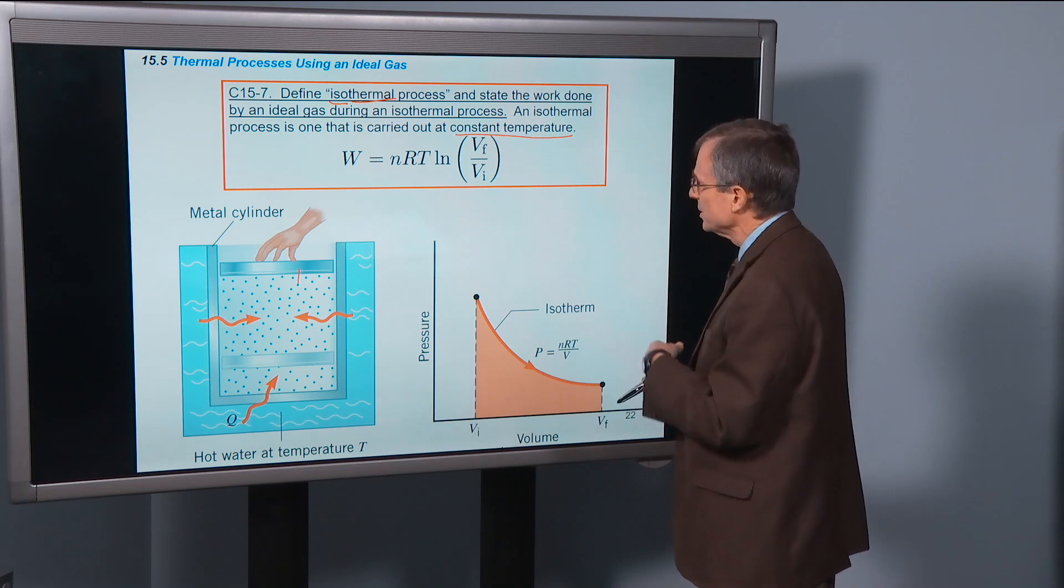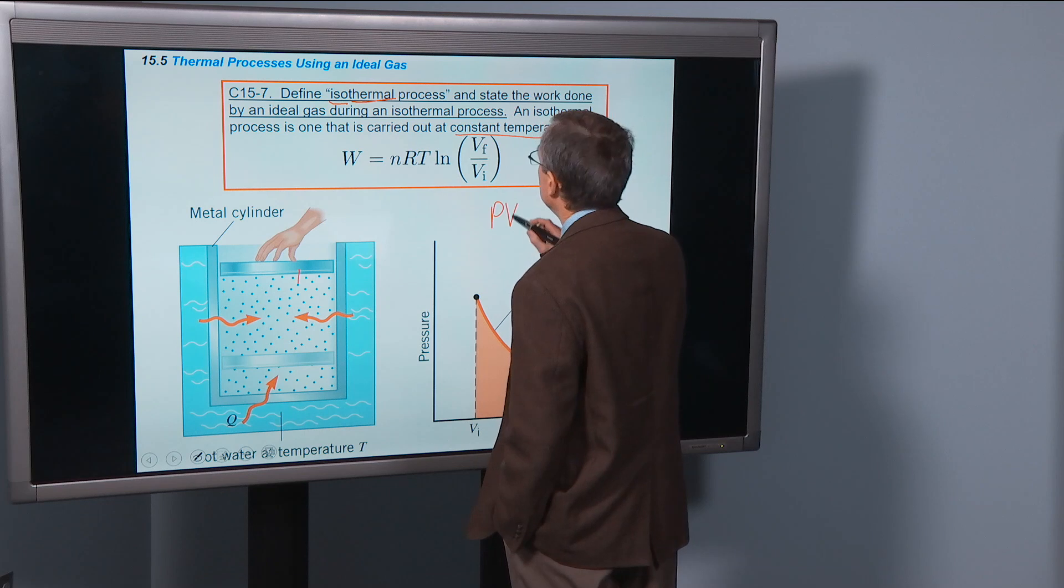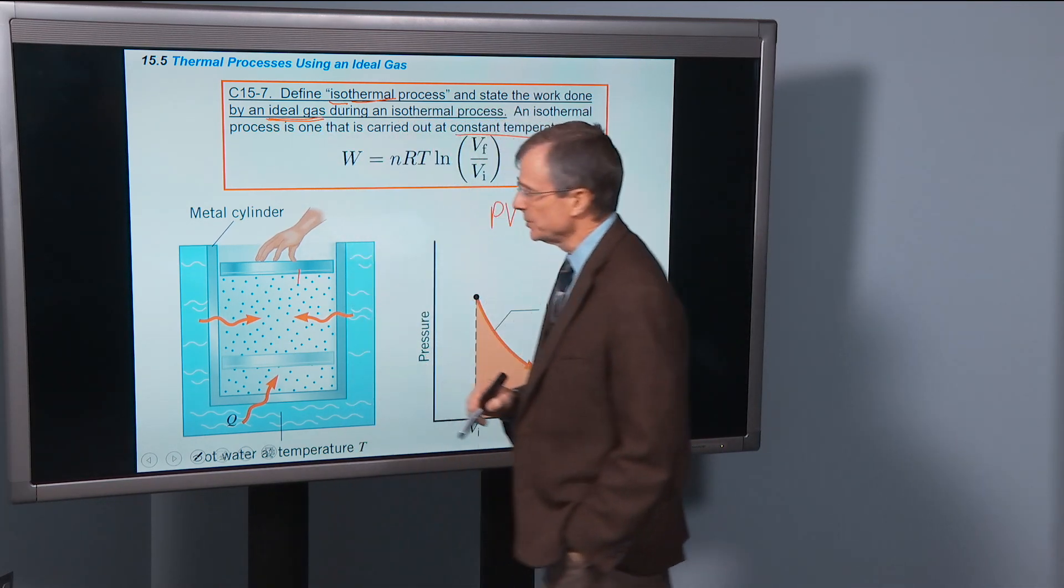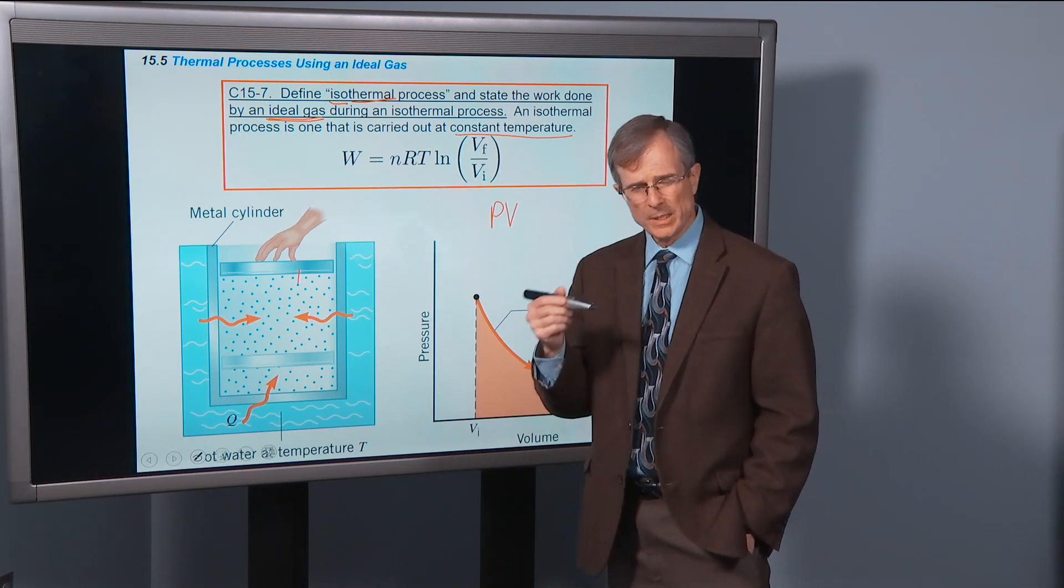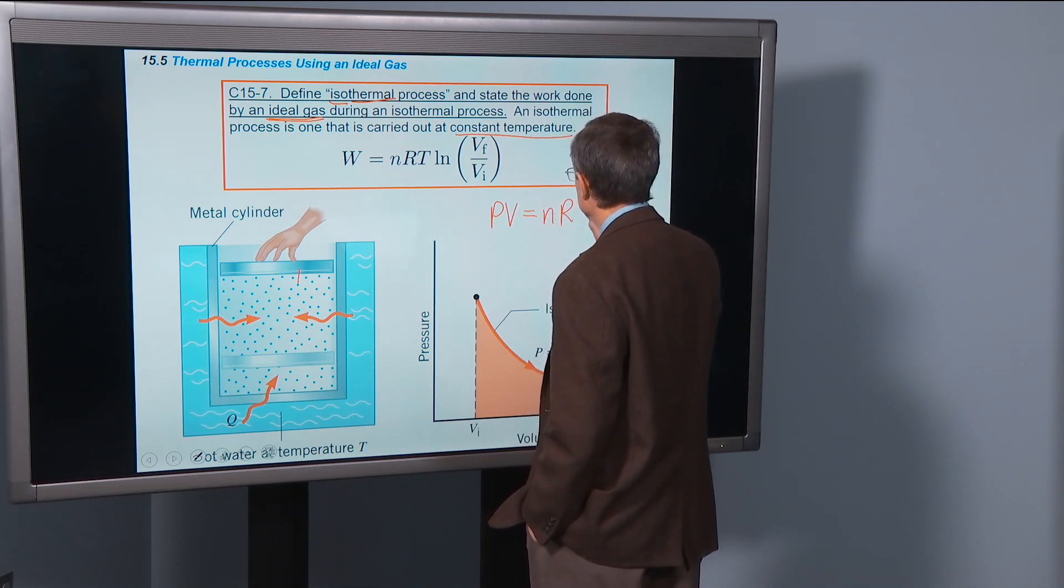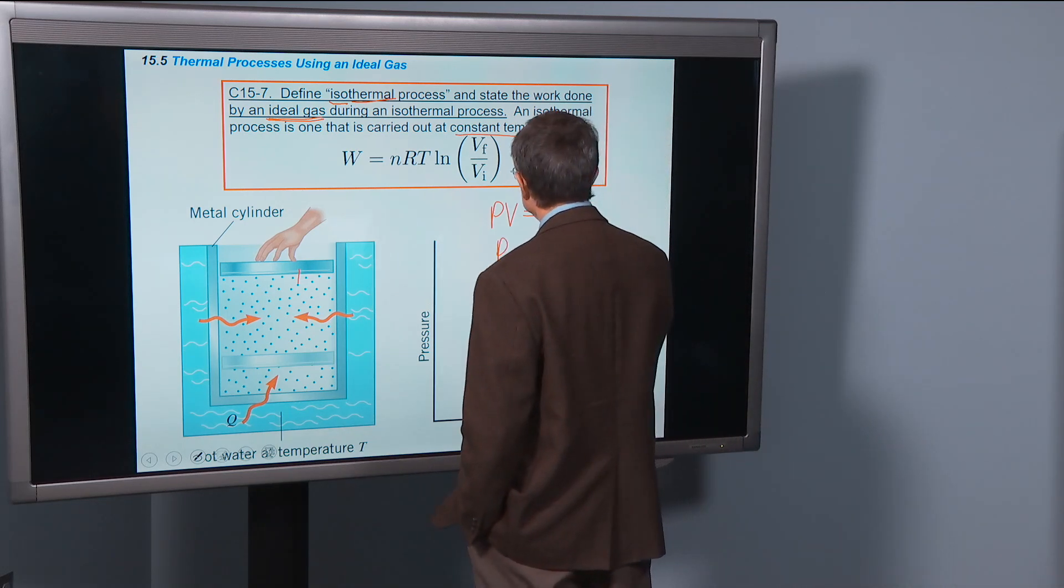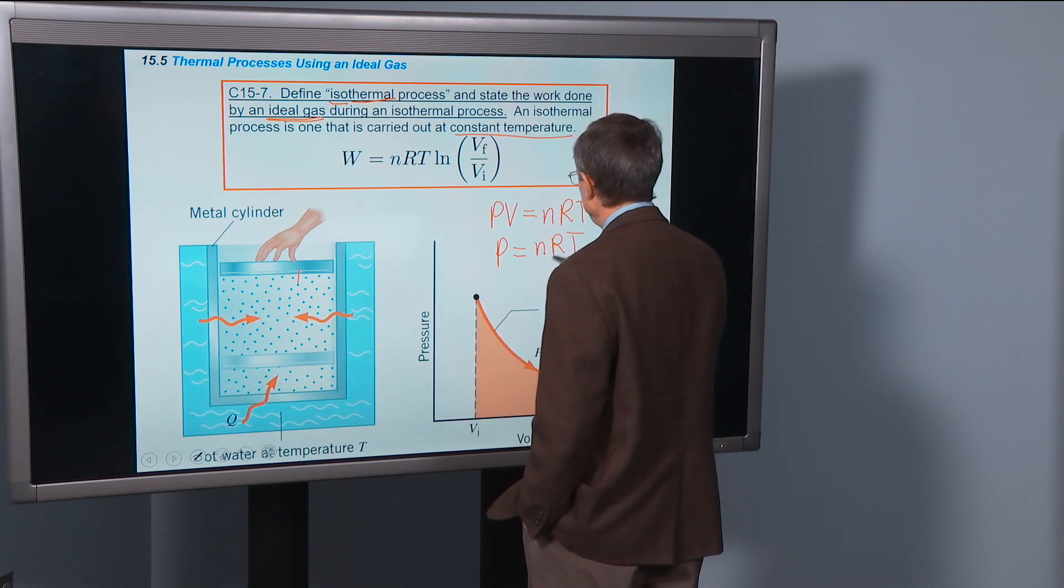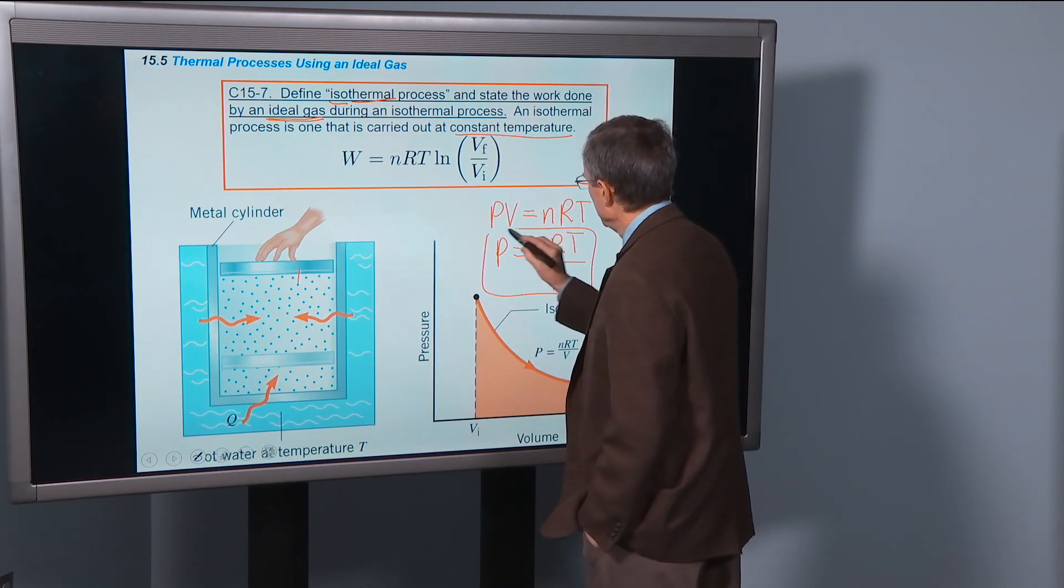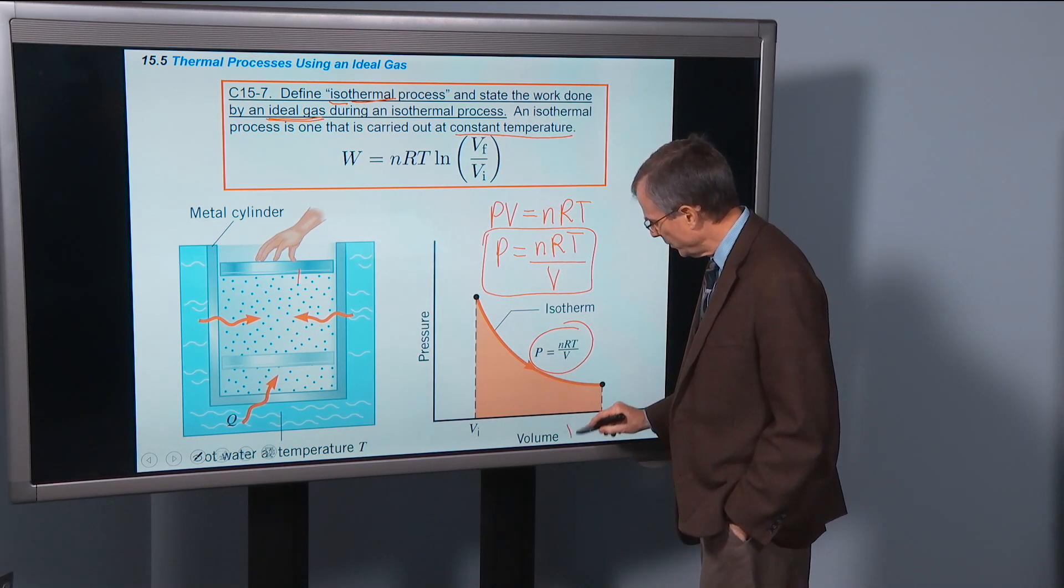Well, the pressure versus volume can be determined from the ideal gas law. Whereas for the last two we didn't specialize to ideal gases, on this one we are specializing to ideal gases. There's the ideal gas law, but if we want to plot the pressure, we'll have to divide both sides of this equation by the volume. So the pressure, how does it vary with volume V?